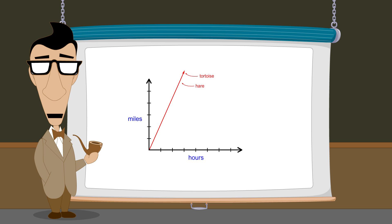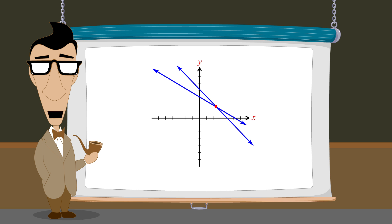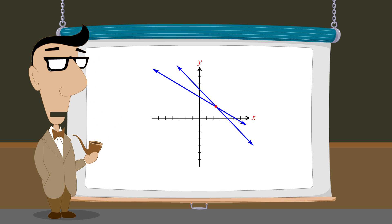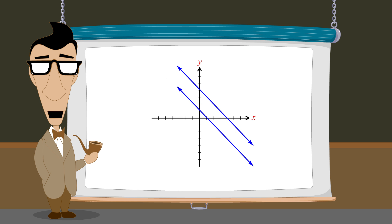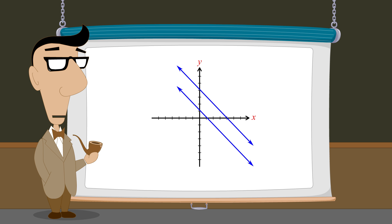So there are three possible types of solutions we may encounter when solving systems of two linear equations in two variables. The first possibility is that the two graphs cross. Their single intersection point reflects the fact that only a single solution exists which simultaneously satisfies both equations. The second possibility is that the two equations describe distinct but parallel lines. Since these graphs have no point of intersection, no solution exists which can satisfy both equations. The solution set of this system is therefore the empty set.